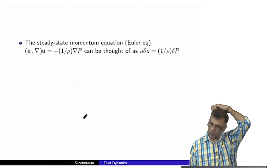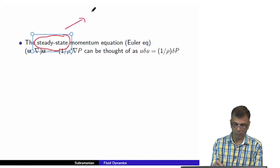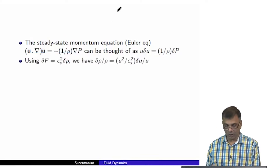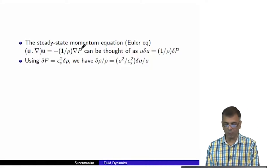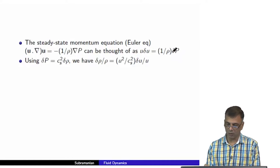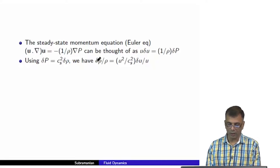Now let us write the steady-state momentum equation. Steady state simply means partial d/partial t equals zero. The Euler equation, neglecting viscosity, can be written as u del(u) equals one over rho times del(p).